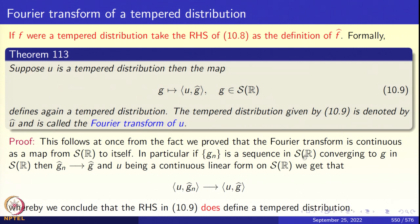We have to check that 10.9 is a tempered distribution, meaning we must check that the map 10.9 is continuous. This follows from the previous result that the Fourier transform is continuous as an operator from S(R) to S(R). If G_n is a sequence in S(R) converging to G, then G_n-hat will converge to G-hat in S(R). Since u is continuous from S(R) to the scalars, u paired with G_n-hat converges to u paired with G-hat, proving sequential continuity of 10.9. So 10.9 does define a tempered distribution.